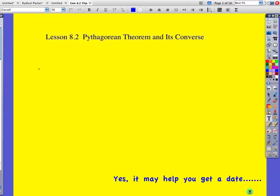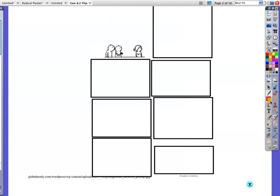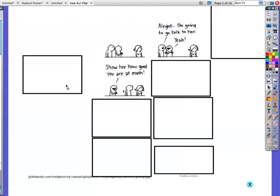Okay, Lesson 8.2, Pythagorean Theorem and its Converse. And yes, it may help you get a date. Okay, two guys checking out this girl. Alright, I'm going to go over and talk to her. Yeah. Show her how good you are at math.